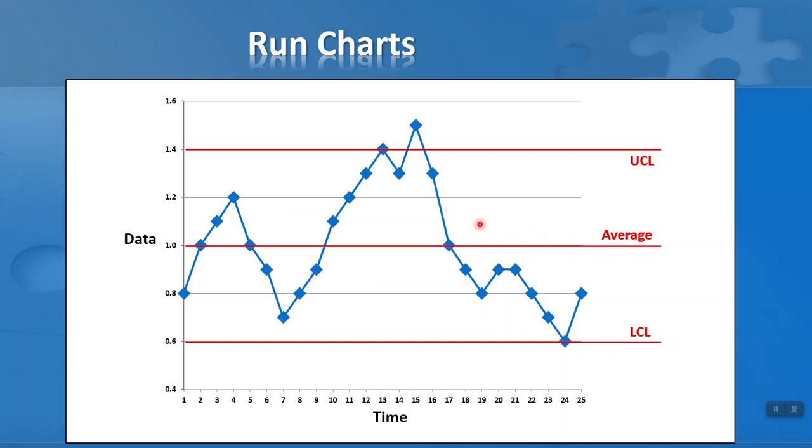We can see in this chart there are some potential problems. One problem is we've got 1, 2, 3, 4, 5, 6, 7 values in a row increasing. That violates what we call the 7-run rule. If there are 7 values increasing or decreasing at any one time, that means there is a problem - the process is out of control. You can also see on the right-hand side there are 7 values below the average, which also violates the 7-run rule. And we have one value that exceeds the upper control limit. So we've got a lot of evidence that our fictitious process here is out of control.